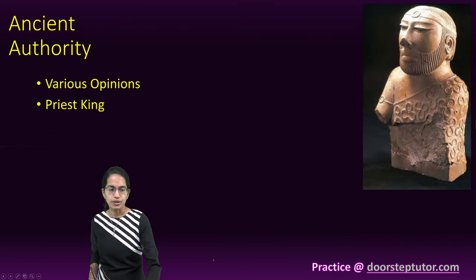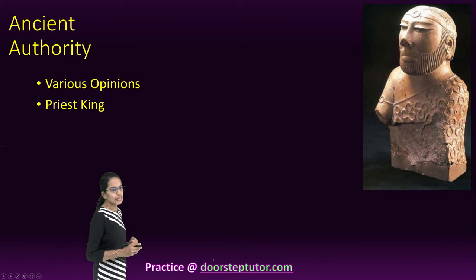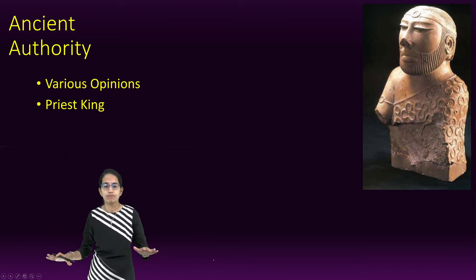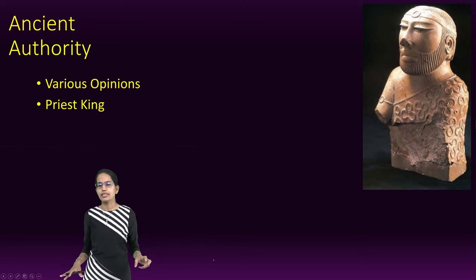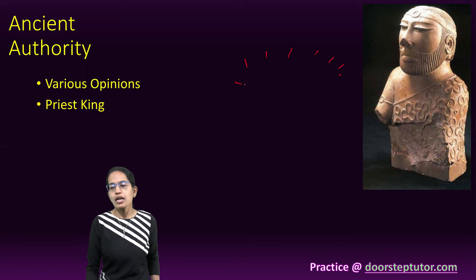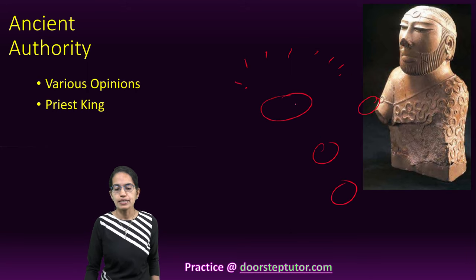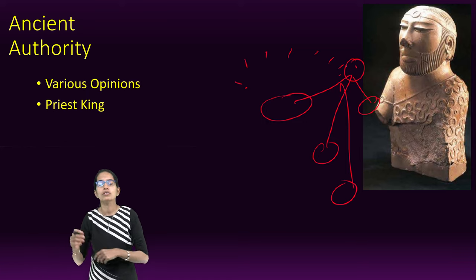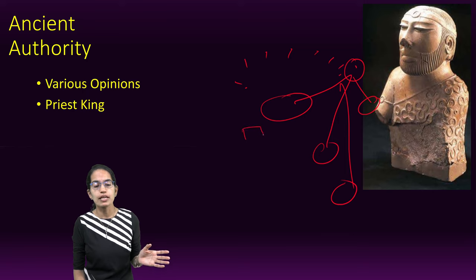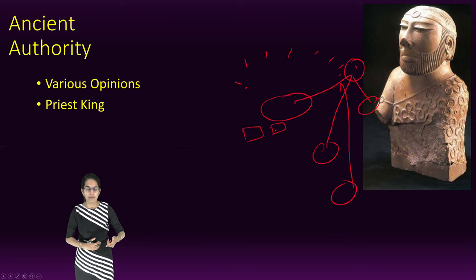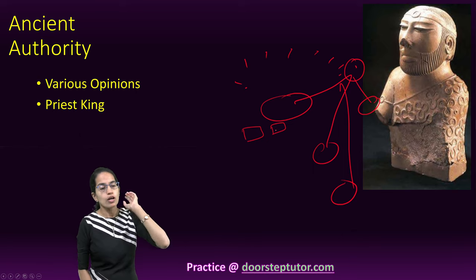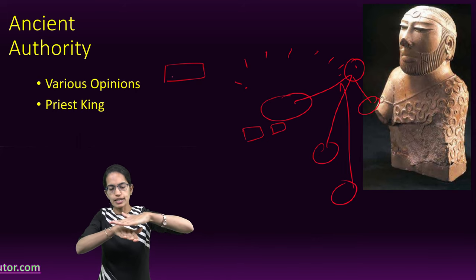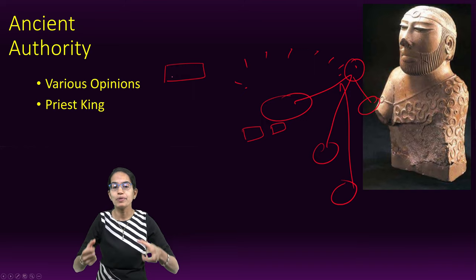Regarding authorities in Harappan civilization, there were various opinions. Some said all people enjoyed equal status; others said there was not a single ruler but many. Yet others argued that all independent settlements had a single governing state, evidenced by the standardized ratio for bricks across all settlements. The arrangement of bricks also varied by layer — alternating orientations — which indicated a stable and durable structure.